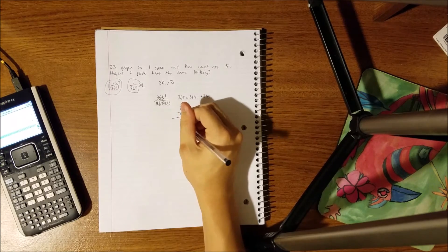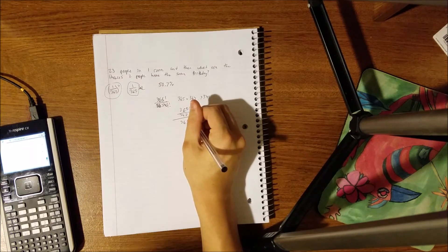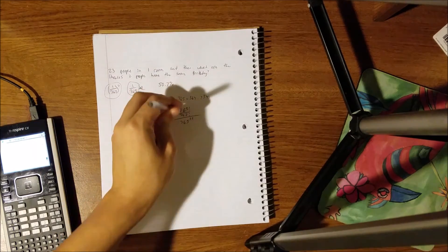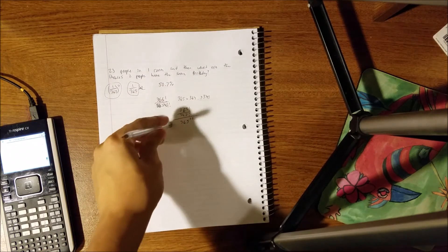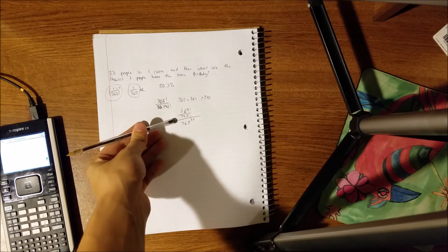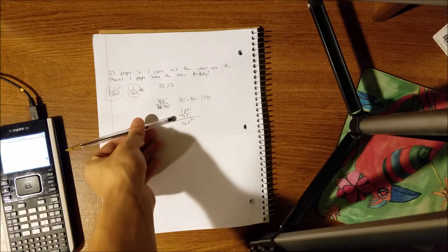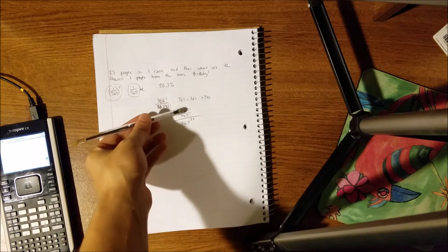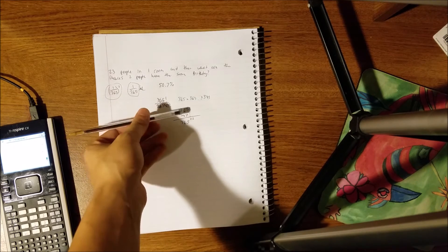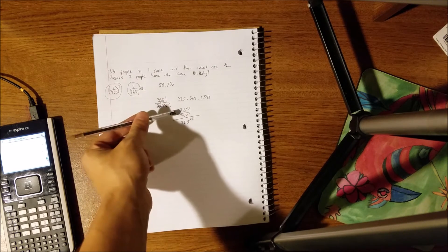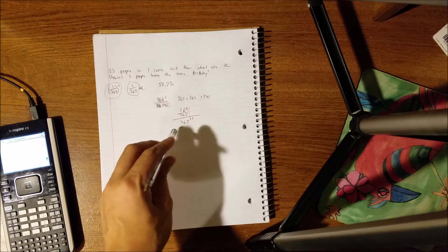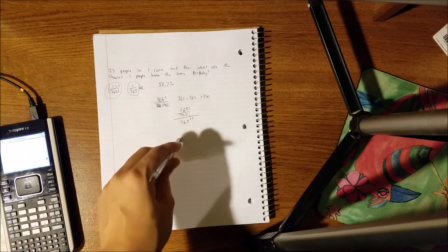and we're going to put that over 365 to the 23rd. Now this is saying that for every single day they had, which is 23, or 365 minus 23 factorial, both have factorials on them, and then it's going to be over 365 to the 23rd,